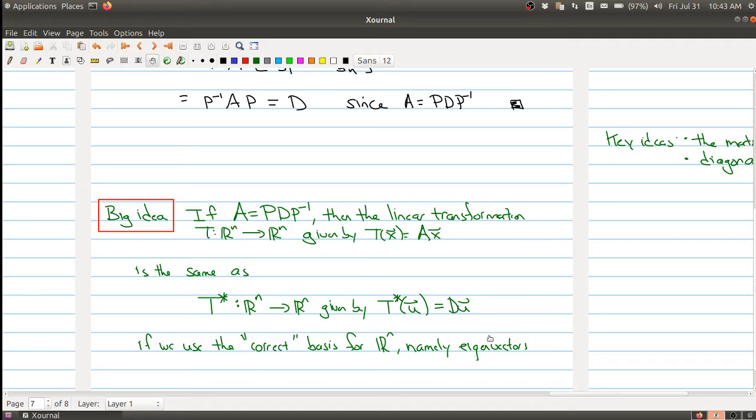So if you transform everything into the right basis, so you take the right point of view, then your linear transformation is actually simply given by a map by a diagonal matrix.